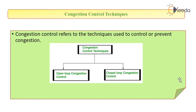Dear students, today we are going to study about open loop congestion control. First, let's understand what congestion control is. Congestion control refers to the techniques used to prevent or control congestion. There are two types of control techniques: one is open loop congestion control, and another one is closed loop congestion control.